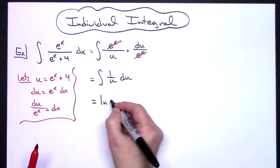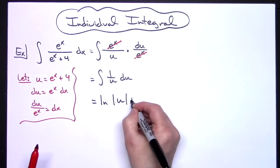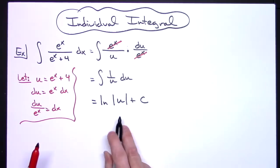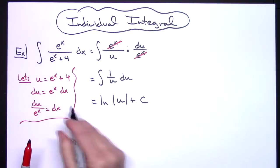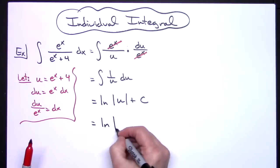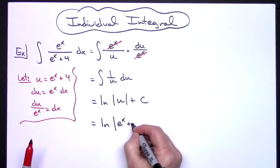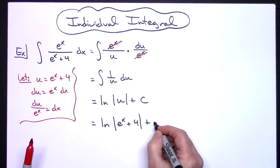Simply here, natural log absolute value of u plus c, and then that last step would be just to replace u with what it equals. So then we'll have natural log absolute value e to the x plus 4, and then plus c.